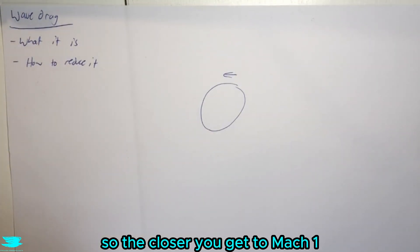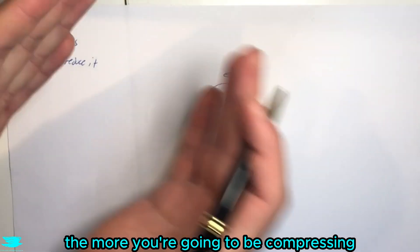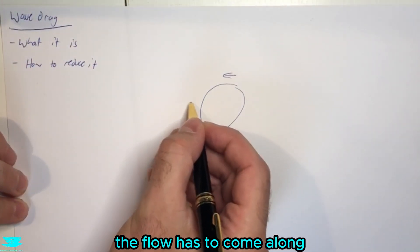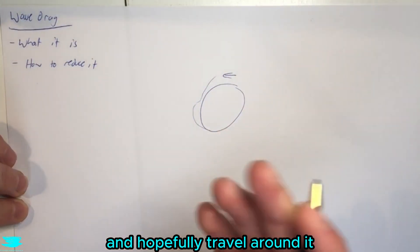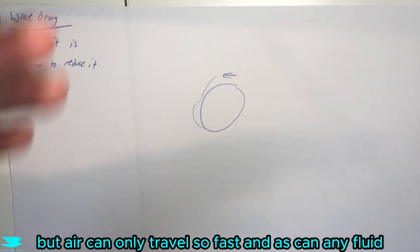So the closer you get to Mach 1, the more you're going to be compressing the air in front of it, so the flow has to come along and hopefully travel around it. But air can only travel so fast, any fluid can.